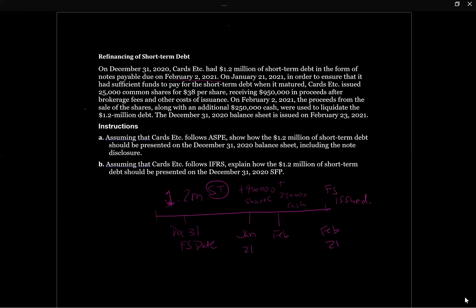Where does this leave us for ASPE versus IFRS, which are the two requests in the question — to figure out what level of debt would be shown on the balance sheet, classified in both short-term and long-term? ASPE states that we have until the financial statements are issued to decide if the debt should be classified as short or long-term. We know that originally the debt was classified as short-term, but then there were two transactions that were used that add back to the $1.2 million. One thing that's really important to remember under ASPE is that there still has to be debt of $1.2 million — all we're discussing is how it's classified. The actual debt existed at the statement of financial position date and wasn't extinguished.